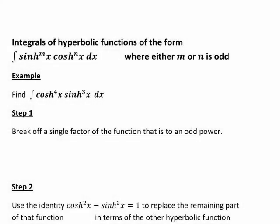In this recording, we look at how to work out integrals of hyperbolic functions where the integrand is a product of a power of sinh(x) and a power of cosh(x), where at least one of these two hyperbolic functions is to an odd power. It's best to illustrate this with an example.